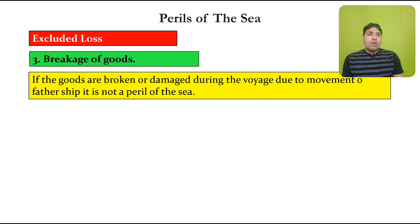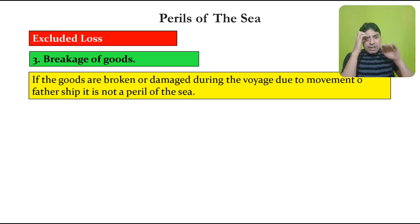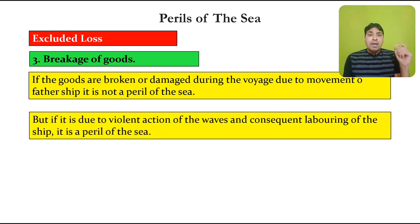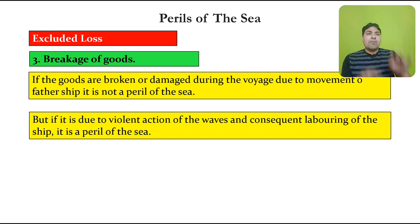The next excluded loss is breakage of goods. If goods are broken or damaged during the voyage due to the natural movement of the ship, it is not a peril of the sea — the insurance company will not be liable. However, if the same damage is caused due to a violent action of waves and consequent labouring of the ship, then it will come under the category of perils of the sea.